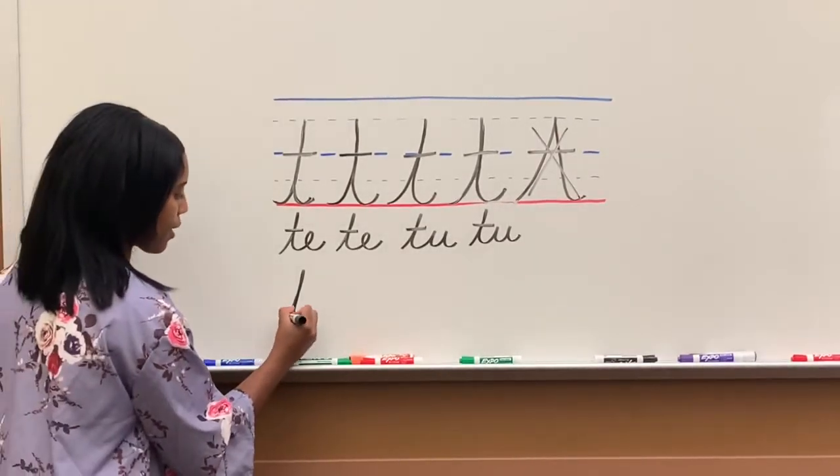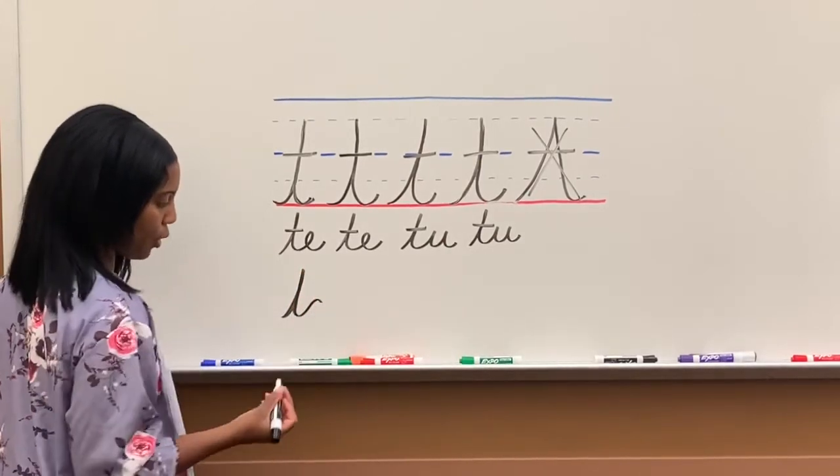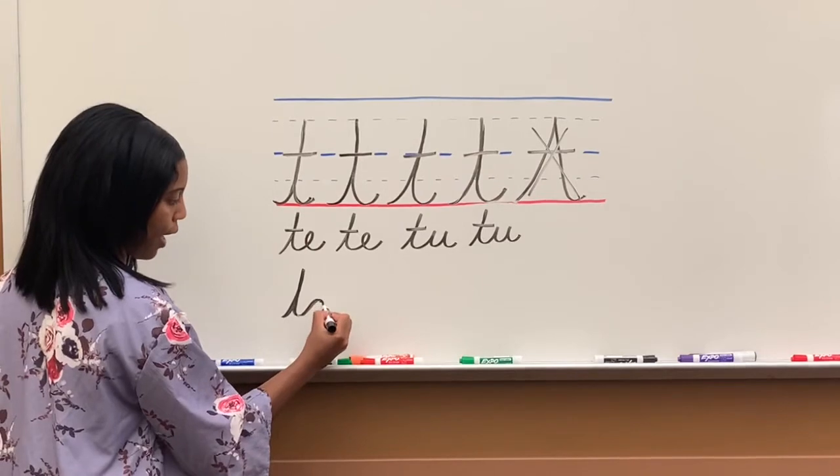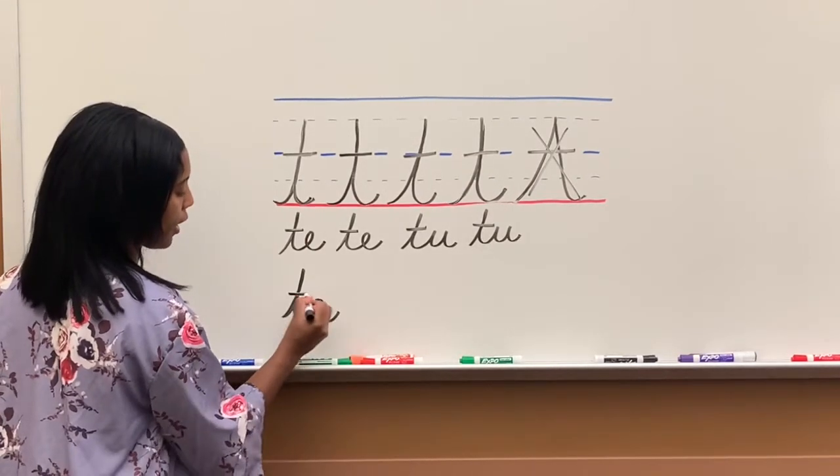whenever I write A, I start with my T. What I do is I go halfway with my A. I go halfway, then I come back around, and then I close the A, cross my T.